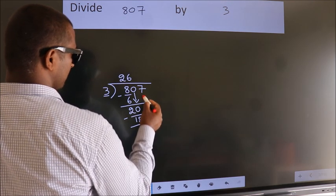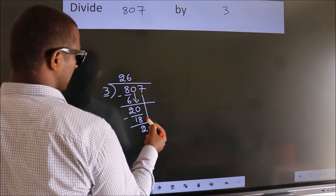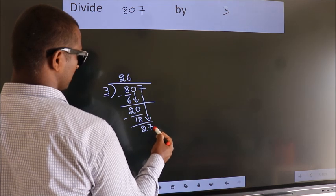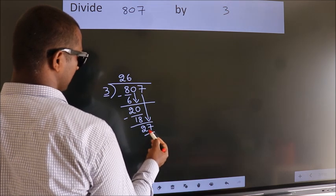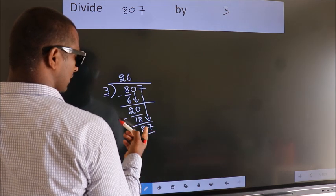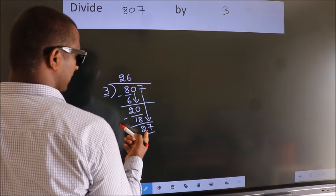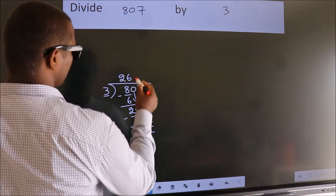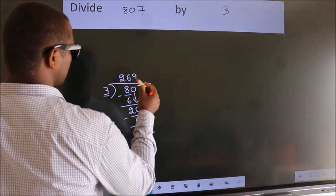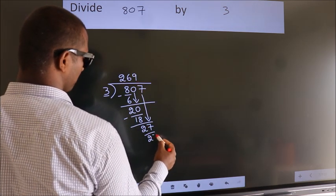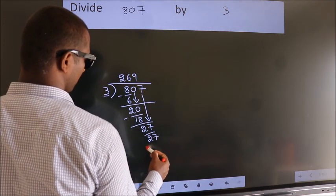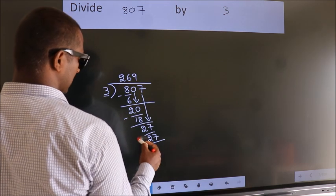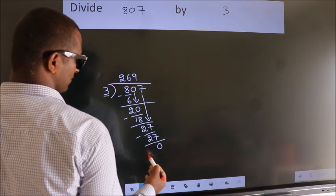After this, bring down the beside number. So, 7 down — so, 27. When do we get 27 in the 3 table? 3 nines: 27. Now we subtract. We get 0.